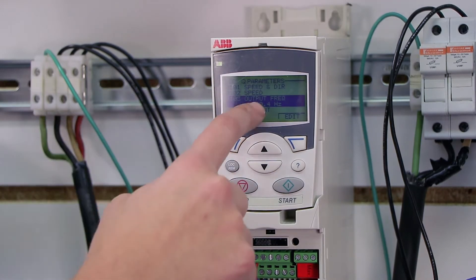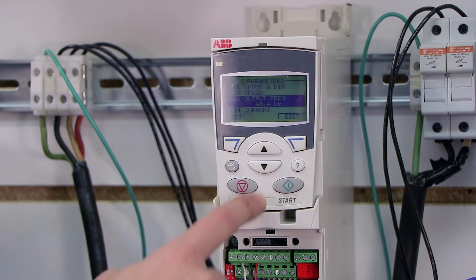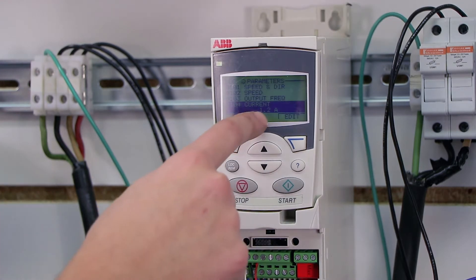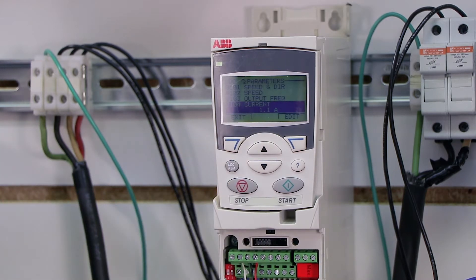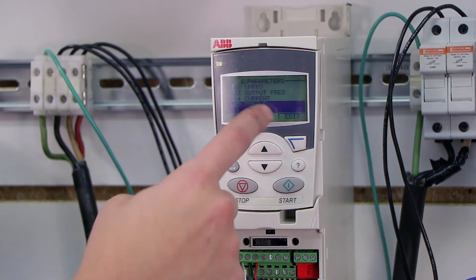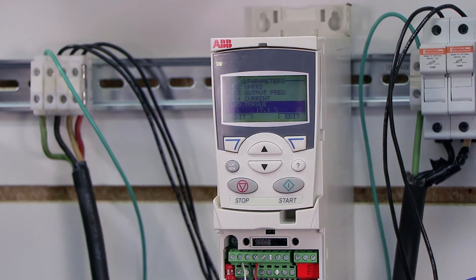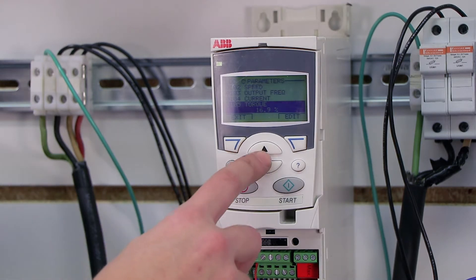So if I go to output frequency, I'll notice it's 60.4 hertz. If I go to current, right now I'm pulling 1.2 amps. It's bouncing between 1.1 amp and 1.2 amps. My torque is at 16.7% of the rated motor, or the rated drive.